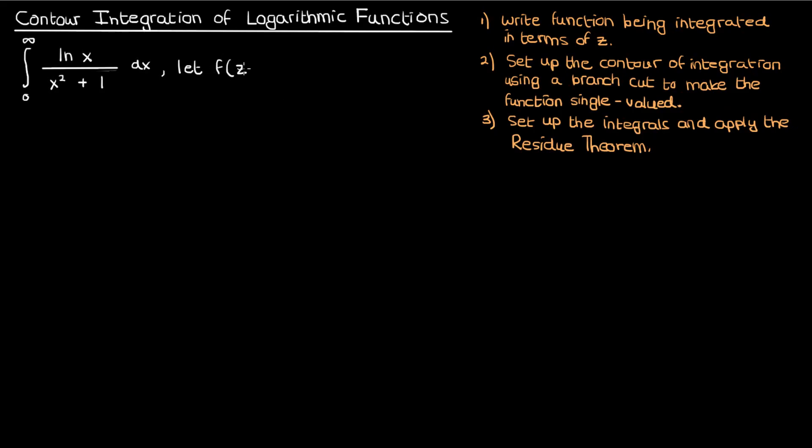Let's do the first step where we'll let f equal ln z over z squared plus 1, the function being integrated. Now the denominator here can be factored as z plus i times z minus i, which is going to come in handy later.